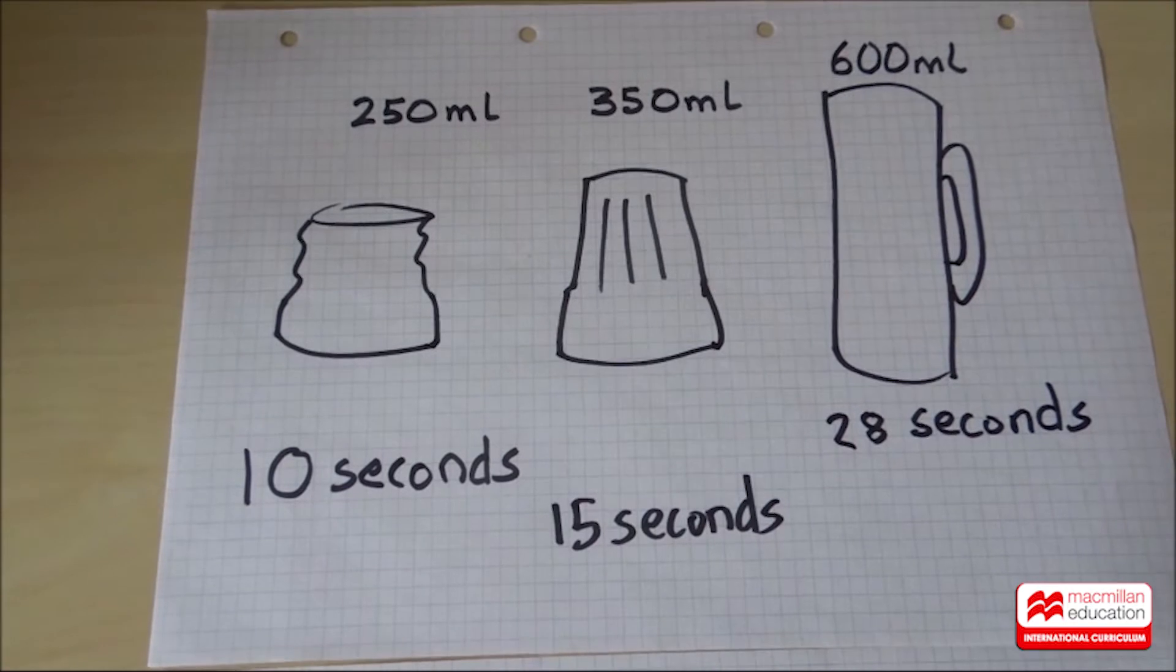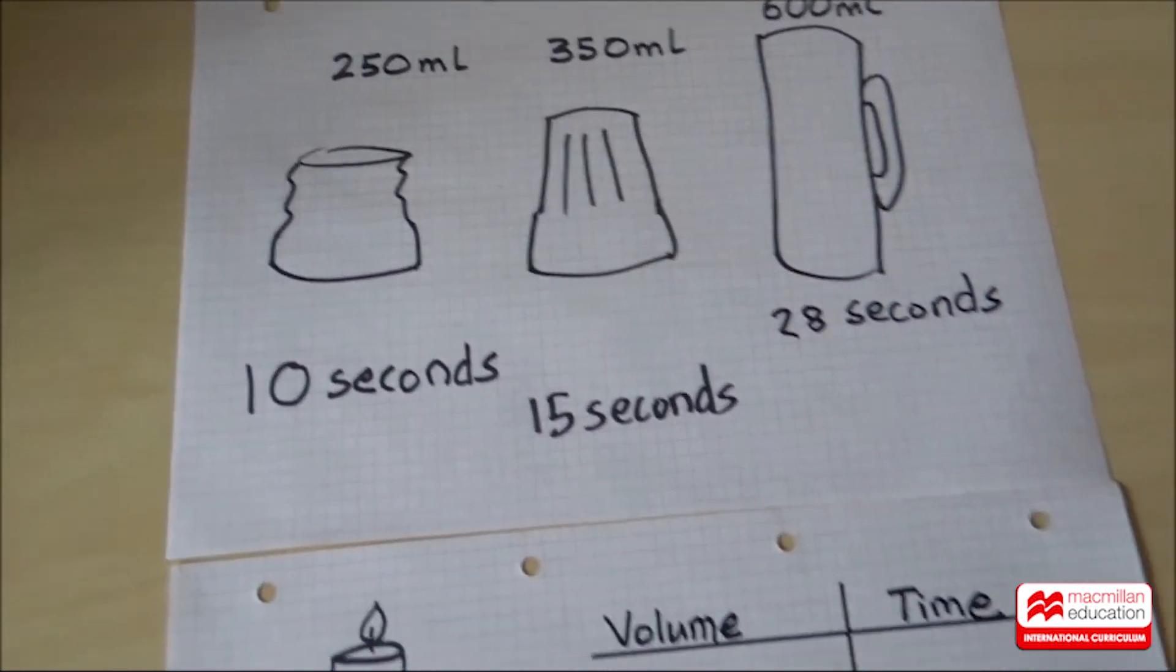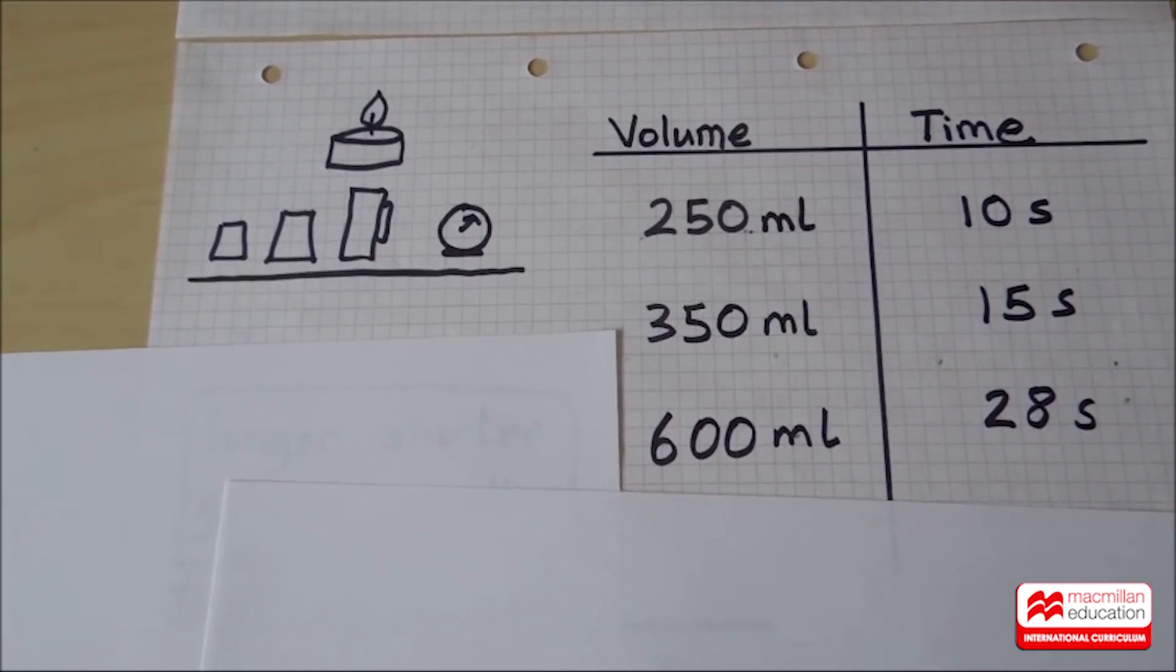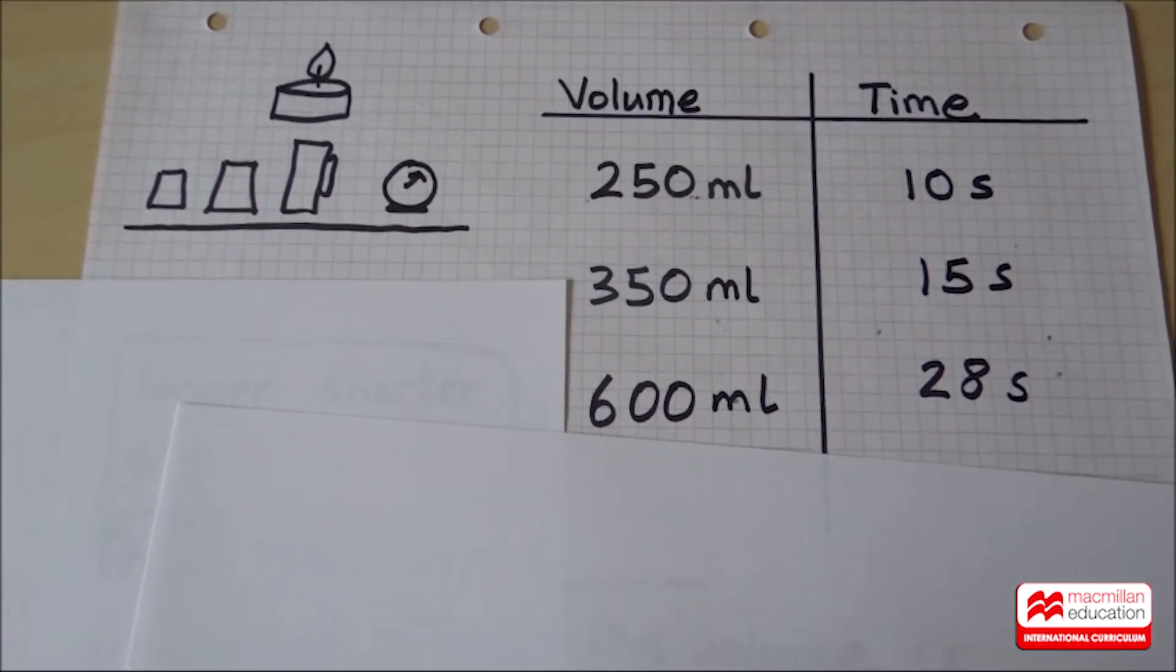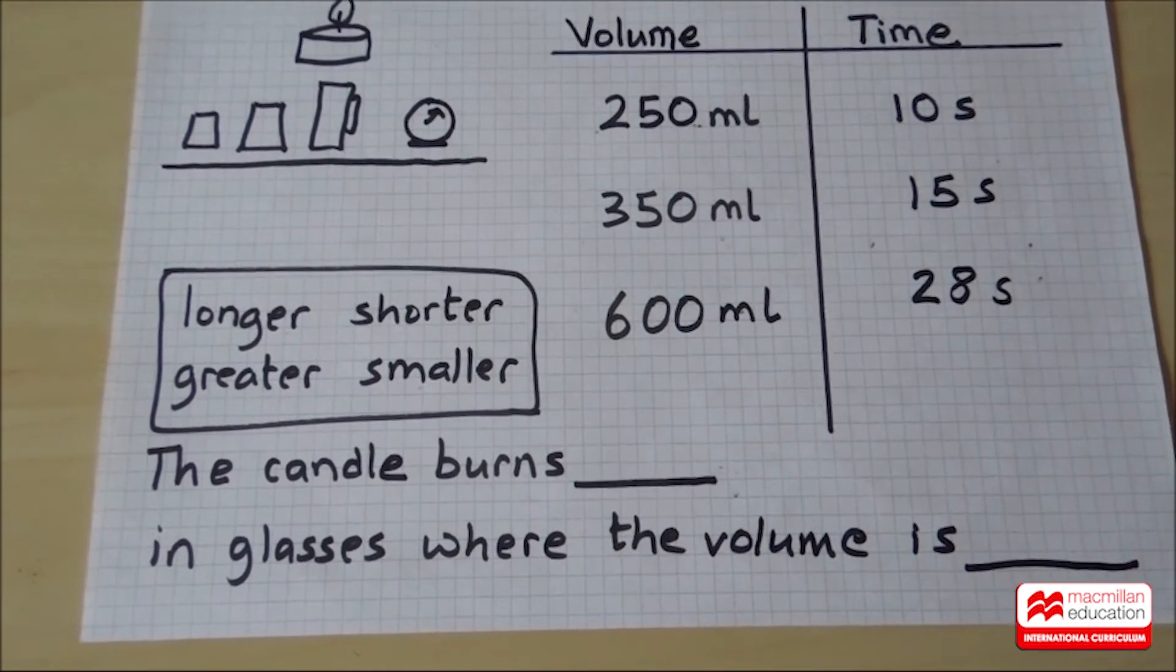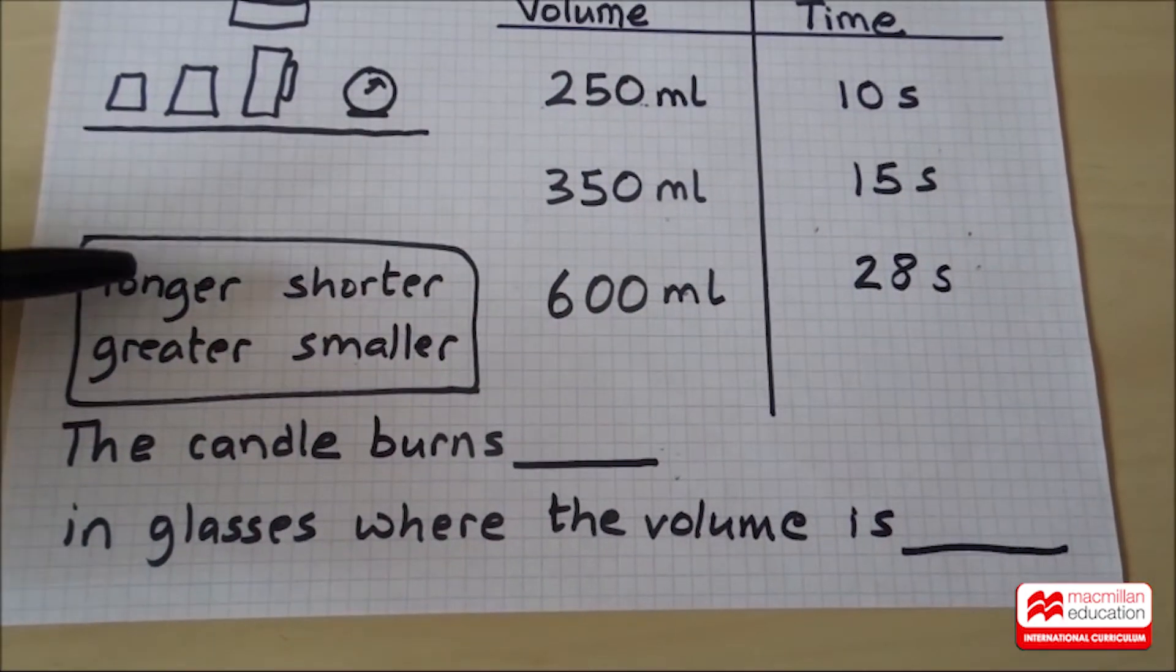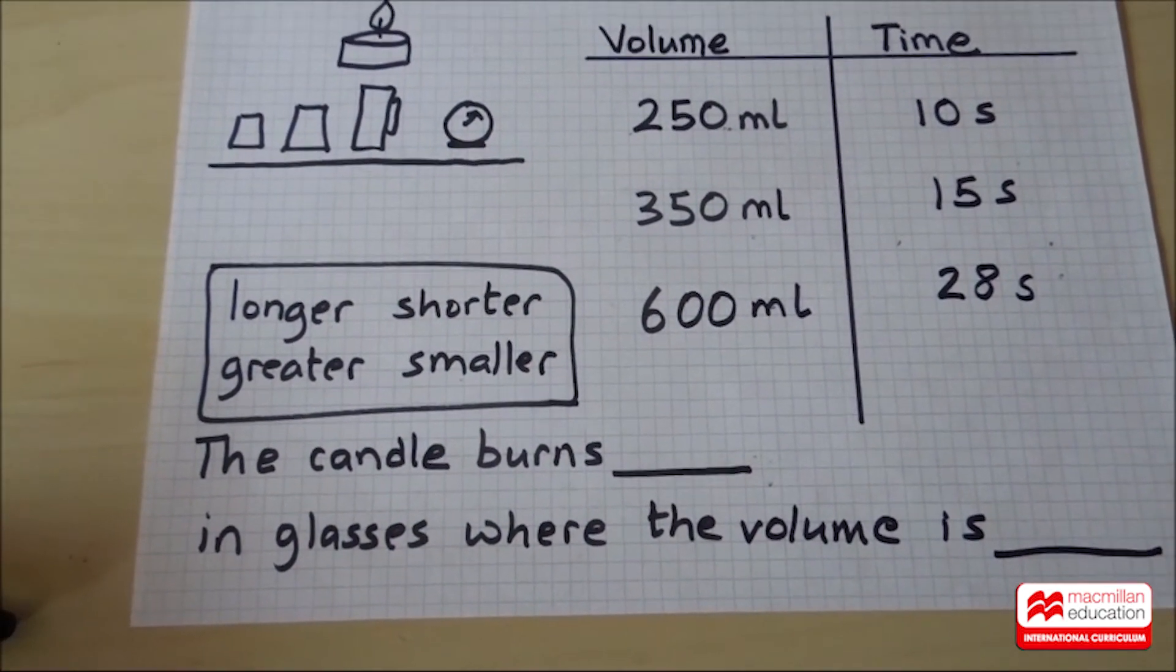So here are our results on the sheet that we've been using. And what I've done is write the results down in a table form. This always makes it easier to make sense of patterns. Can you see an easy pattern? See if you can complete our easy pattern sentence. The candle burns blah blah blah in glasses where the volume is blah blah blah. And we've got these words to choose from. Can you find the words that complete the sentence for our results?